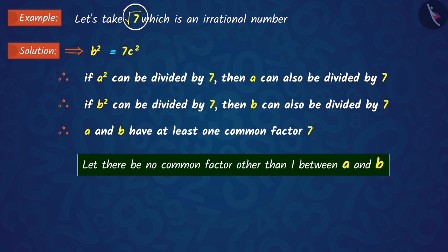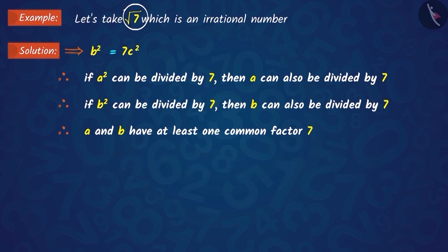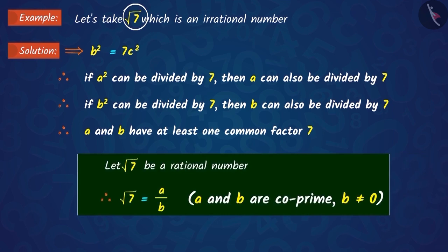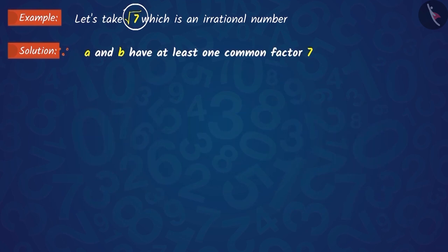This contradiction has occurred because we have made an incorrect or erroneous assumption that the square root of 7 is a rational number. Therefore, we have proven that the square root of 7 is an irrational number because we found a common factor other than 1 in A and B.